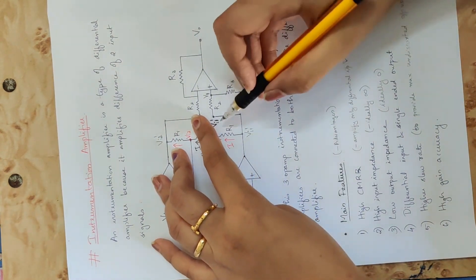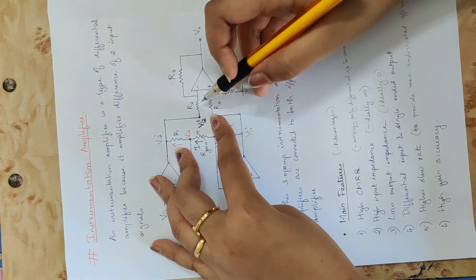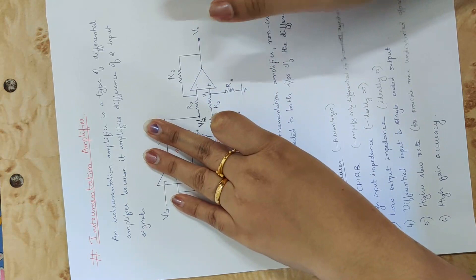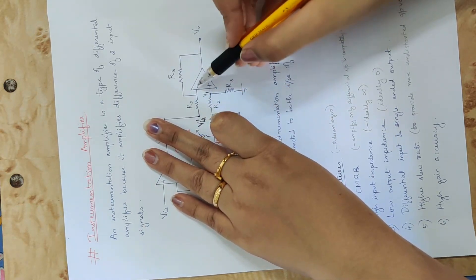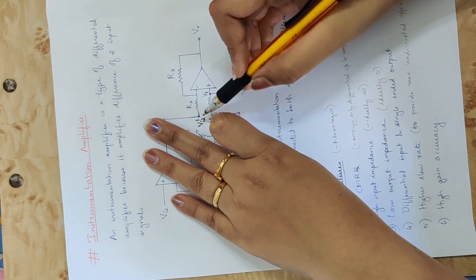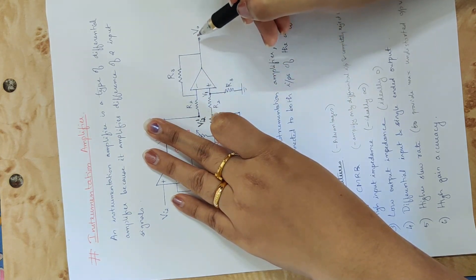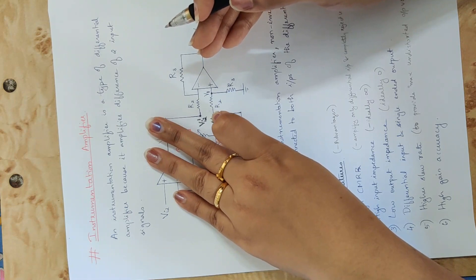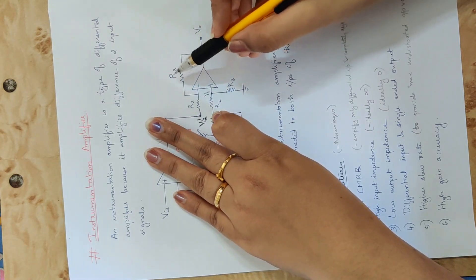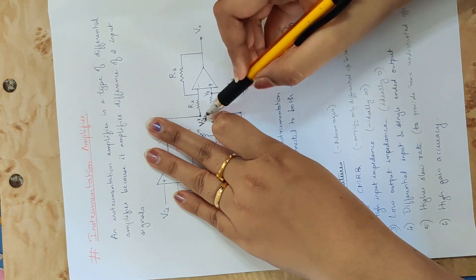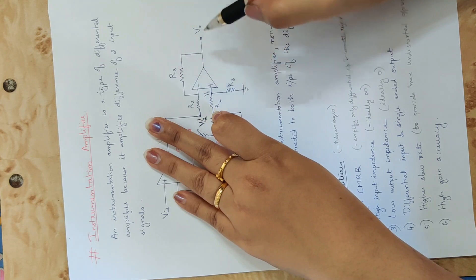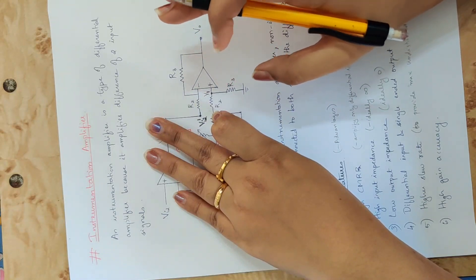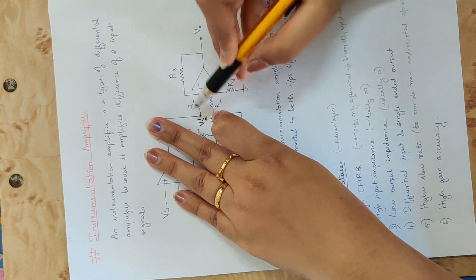Suppose we apply Vi2' alone. We can see from the circuit that the input is at the negative terminal. That is the inverting amplifier case. The output voltage equation for the inverting amplifier is: Vo equals minus Rf by R1 into Vi. Here Rf is R3 and R1 is R2, so Vo due to Vi2' equals minus R3 by R2 into Vi2'.